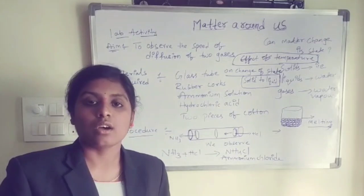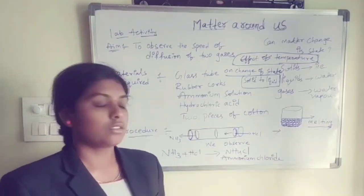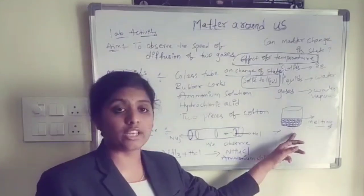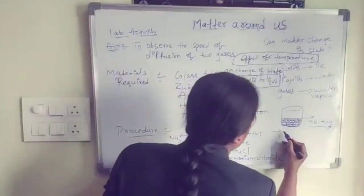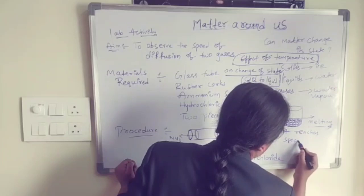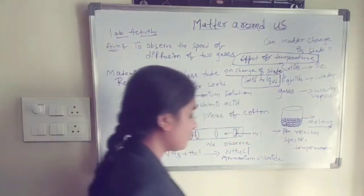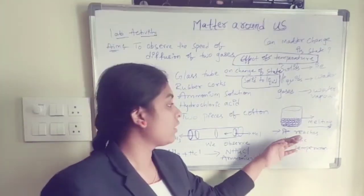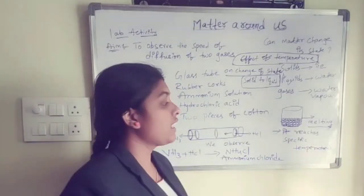Observe the temperature on the thermometer until the ice melts. After some time, we observe that the temperature of the mixture of solid and liquid does not change until it reaches a certain specific temperature. The temperature at which a solid substance changes to a liquid is called the melting point.